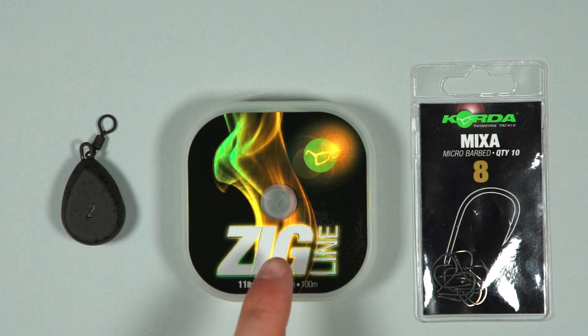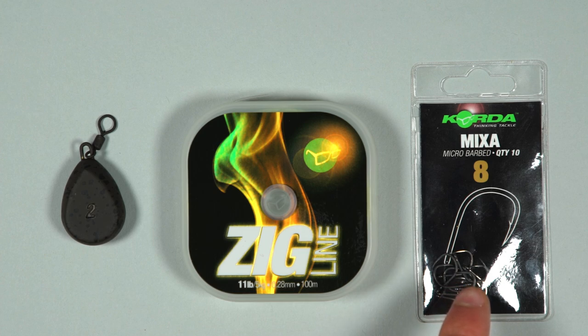A size 8, 10 or 12 mixer hook. Normally the spookier the carp the smaller the hook you'll use.